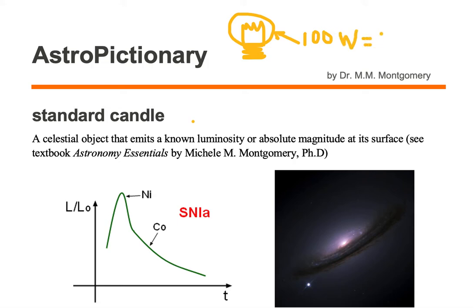In a dark room, it doesn't matter where we put this 100 watt light bulb — it's still going to shine 100 watts at its surface no matter if it's far away from us or close to us. We would call this 100 watt light bulb a standard candle because we know the power output at its surface.